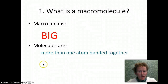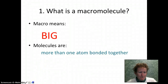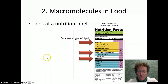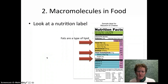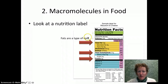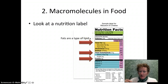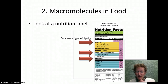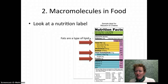This is question one on your lab sheet. Macromolecules in food are three groups that we're going to talk about today. You can find these groups on a nutrition label. Here we've got fat - fat is a type of lipid, so lipids is our first group. There are lipids in lip balm. They're fats, oils, and waxes. And if you put on lip balm today, you've put on lipids.